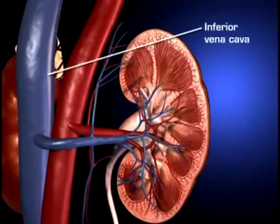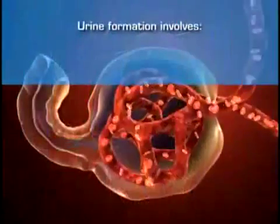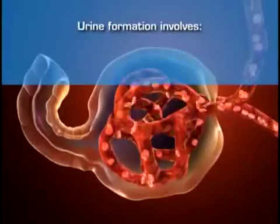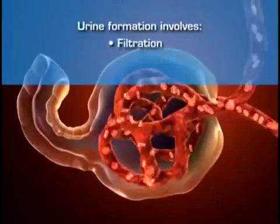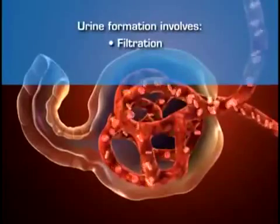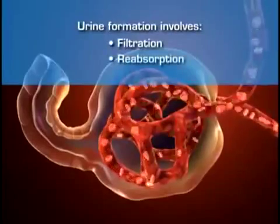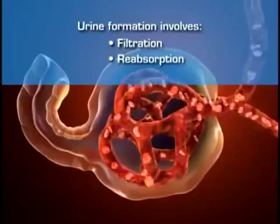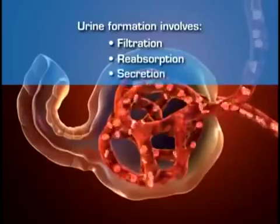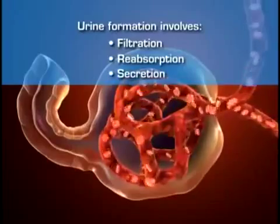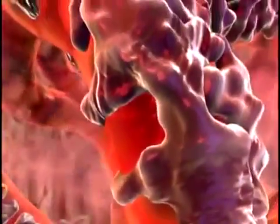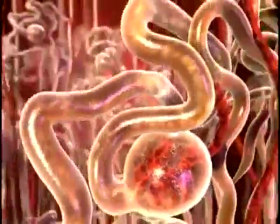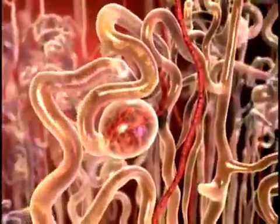The filtrate then diffuses across Bowman's space and into the tubule system of the nephron. In the tubules, some substances are added to the filtrate as part of the urine formation, and some substances are reabsorbed out of the filtrate and back into the blood.